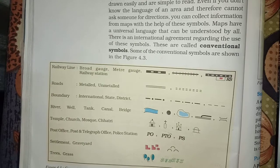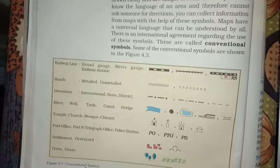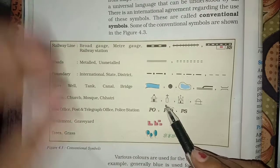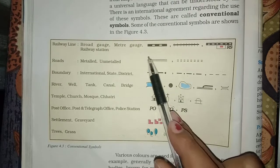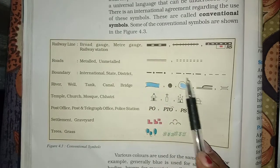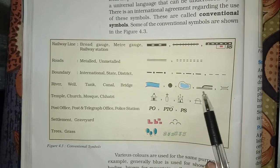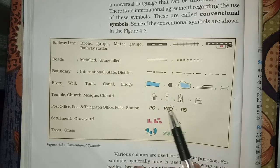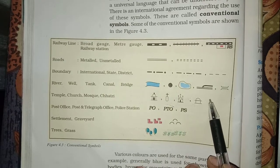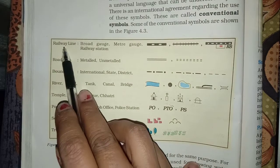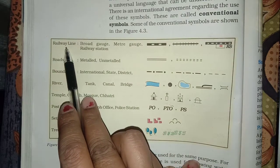See this 4.3, figure conventional symbols. Here are all conventional symbols. All the symbols are everywhere the same as it is. International level agreement means all the symbols are the same everywhere.